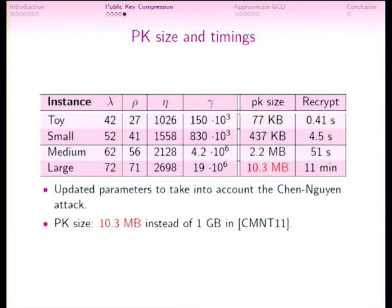We implemented the scheme for various parameter sets and get a public key size of roughly 10 megabytes instead of 1 gigabyte in the previous implementation at Crypto. The performances are otherwise the same — the public key size becomes rather practical, but a ciphertext refresh is still time consuming.